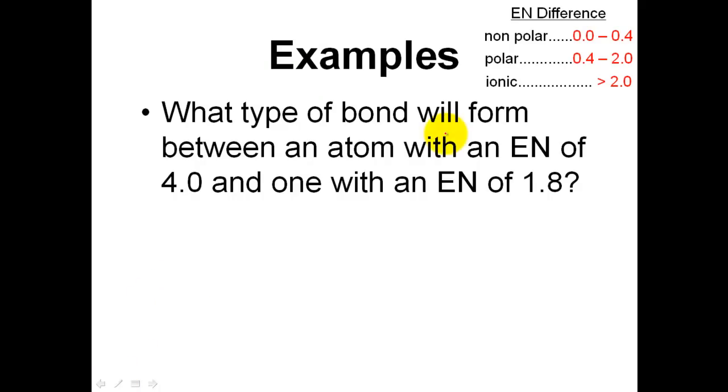Here we go. Let's wrap it up with an example or two. We've got what type of bond will form between an atom with an electronegativity of 4.0, and one that has an electronegativity value of 1.8. And let's just do a quick subtraction problem. I have a 2.2 value here, and 2.2 is going to classify this one as an ionic bond. And that's simply based upon the differences in electronegativities.